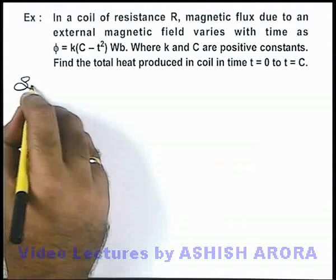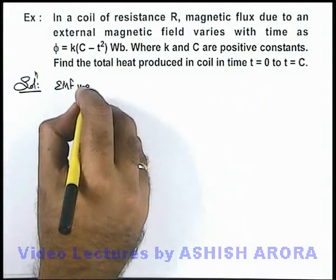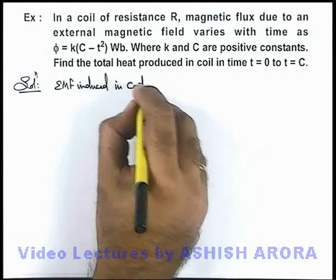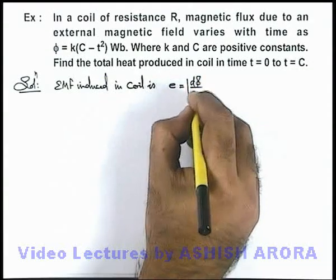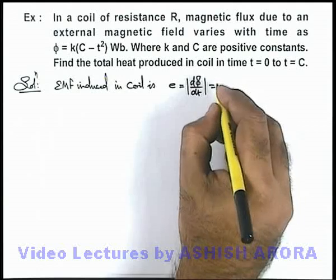Now in this situation, the very first thing we can do is calculate the EMF induced in the coil. This EMF we can write as the magnitude of dφ/dt. On differentiating this expression, we are getting this as 2kt.